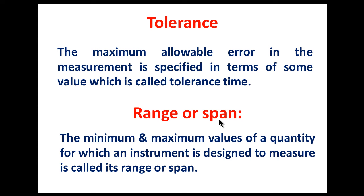Next is range and span. The minimum and maximum values of the quantity for which an instrument is designed to measure is called its range or span. For example, an electrical signal span of 4 to 20 milliamperes, or a pneumatic system span of 3 to 15 psi.